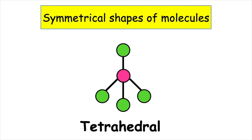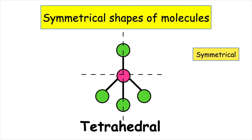Shape number four is tetrahedral. We can see that along the x-axis we have a line of symmetry. Tetrahedral has a bond angle of 109.5°, so all the bond angles are the same. It is symmetrical along both the x and the y-axis because all of the atoms surrounding the central atom are the same, so therefore this would be a symmetrical shape.